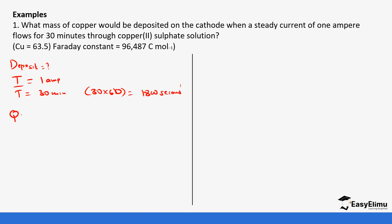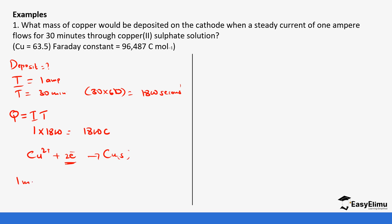First, we calculate the quantity of electricity: Q = I × t = 1 × 1,800 = 1,800 coulombs. Next, we look at the Faraday constant: one mole of electrons gives 96,487 coulombs. We identify that copper ions are discharged at the cathode — Cu²⁺ + 2e⁻ → Cu — so we are working with 2 moles of electrons.